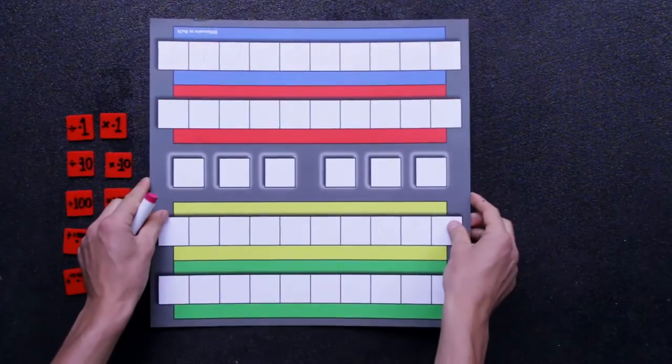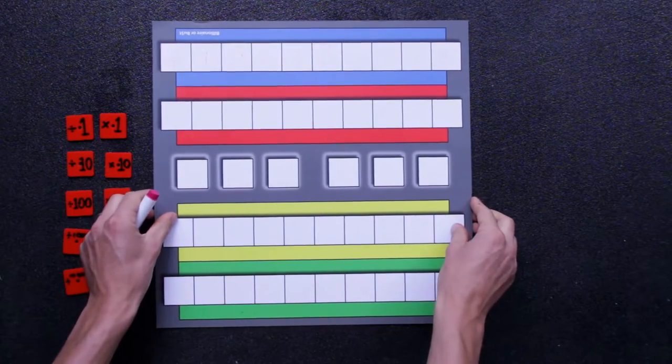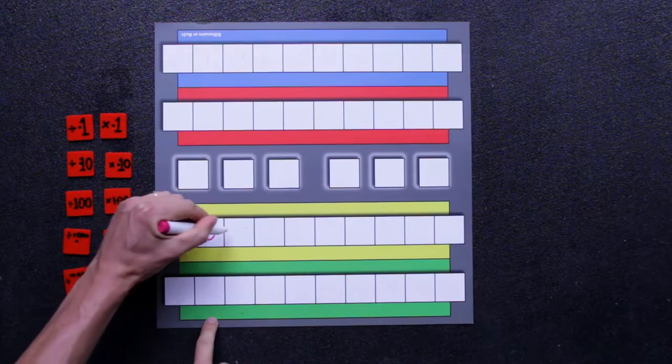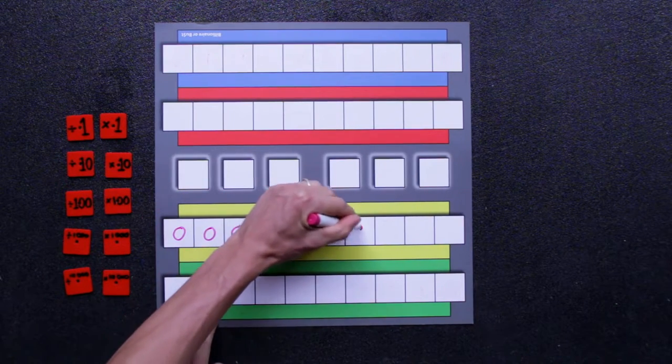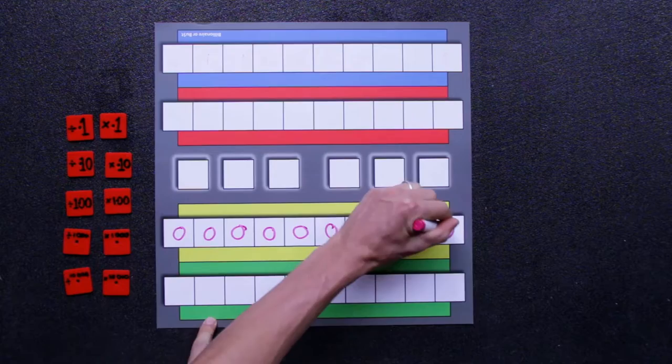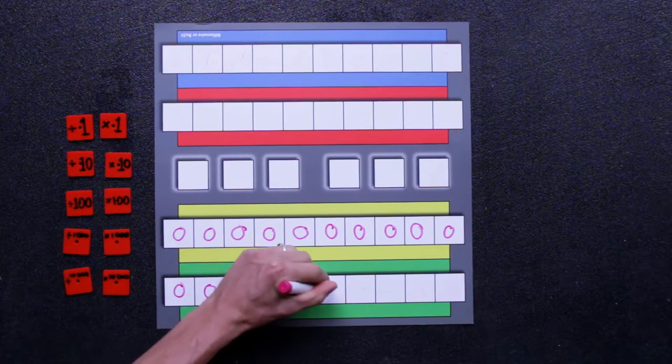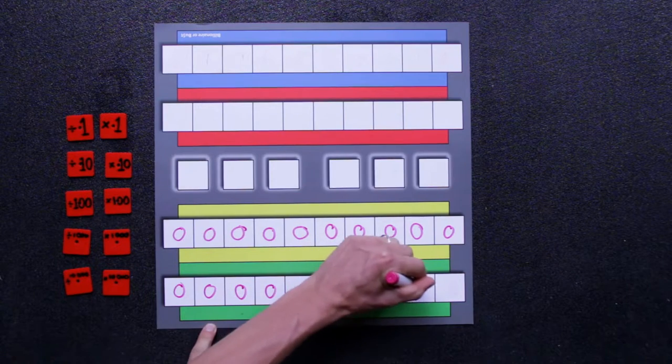You'll need the billionaire or bust board. Whether two people are playing or many people playing, you need to write zeros in each of the positions here. Some will look pretty awkward, but trust me these are zeros.